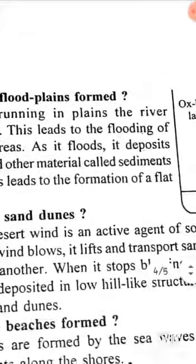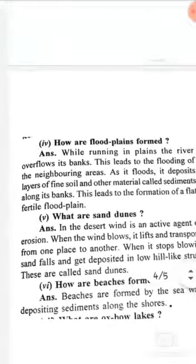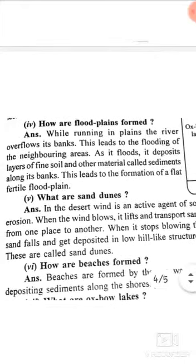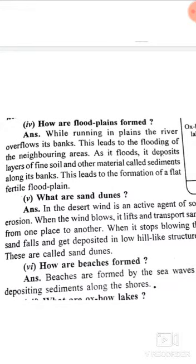How are Flood Plains formed? While running in the plains, a river overflows its banks. As it floods, it deposits layers of fine soil and sediments along the river banks. These deposited layers of fine soil over time form what we call Flood Plains.